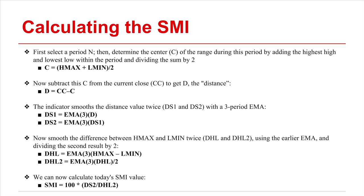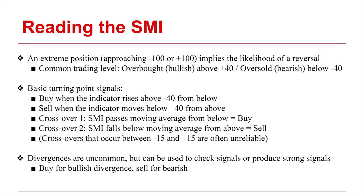Next, a different distance value is double-smoothed — this is the distance between the maximum high and the minimum low. This is done by subtracting the minimum low from the max high, multiplying the result by an EMA, and then multiplying this new sum by another EMA, then dividing by 2 to produce DHL2, the double-smoothed measure of difference between the max high and minimum low. The indicator's value is finally calculated by dividing DS2, the double-smoothed distance between the current close and the midpoint, by DHL2, and multiplying by 100. The oscillator's output ranges from negative 100 to positive 100, a 200-point range.